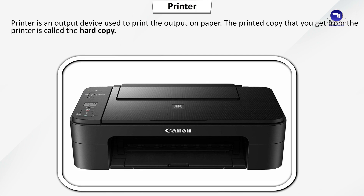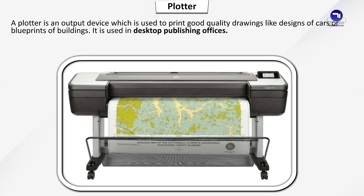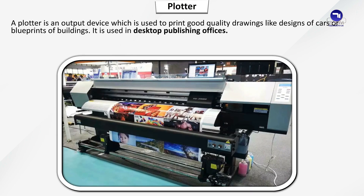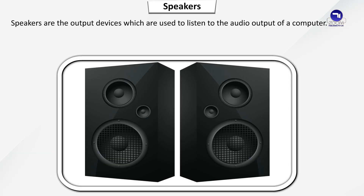A printer is an output device used to print the output on paper. The printed copy you get from the printer is called the hard copy. A plotter is an output device used to print good quality drawings like designs of cars or blueprints of buildings. It is used in desktop publishing offices. Fact File: Engineers and architects also use this device to give 3D effects in their designs. Speakers are output devices used to listen to the audio output of a computer.